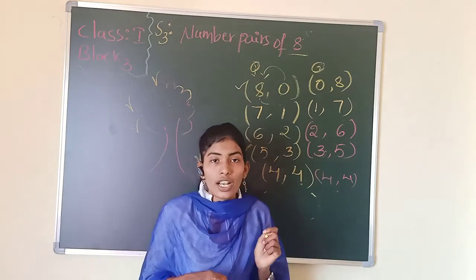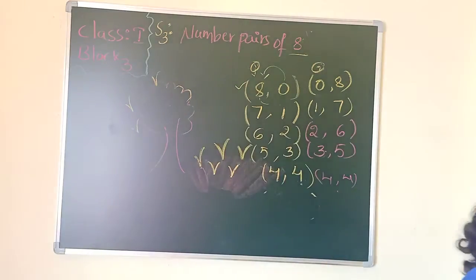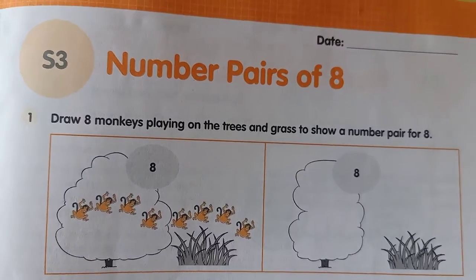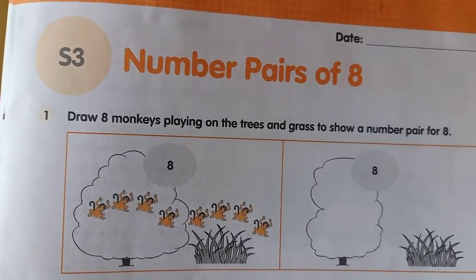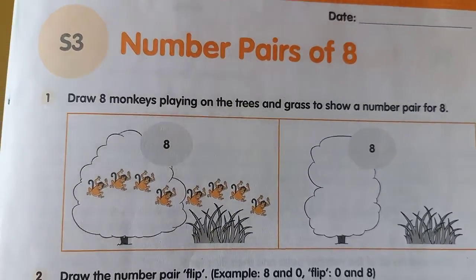Have you understood children how to make number pairs? We split the number into two parts, and if we add those two parts we should get the number. Now everyone open your volumes — S3 number pairs of 8.